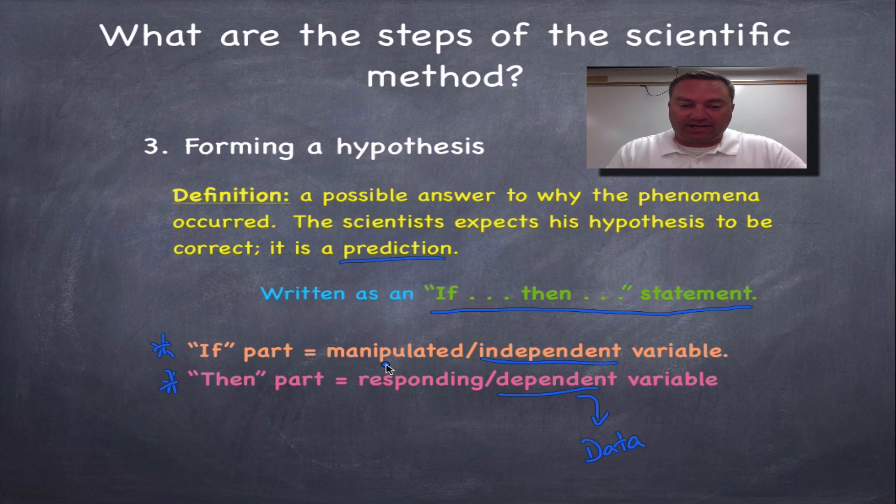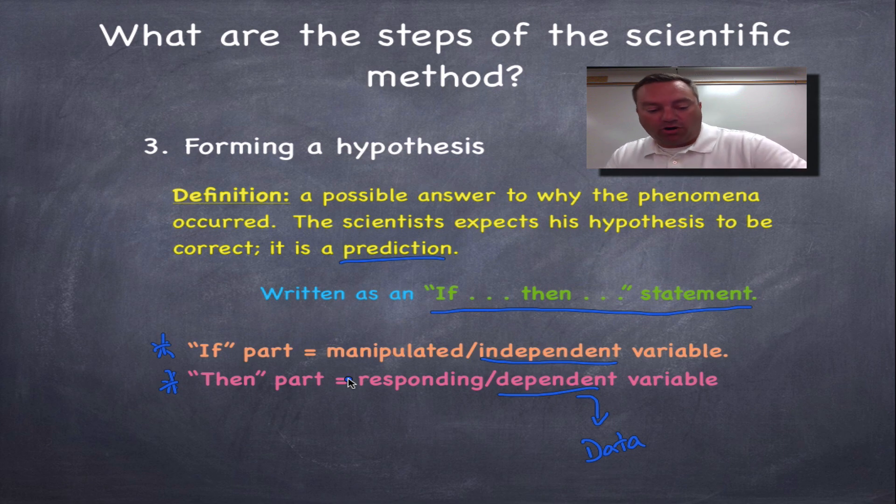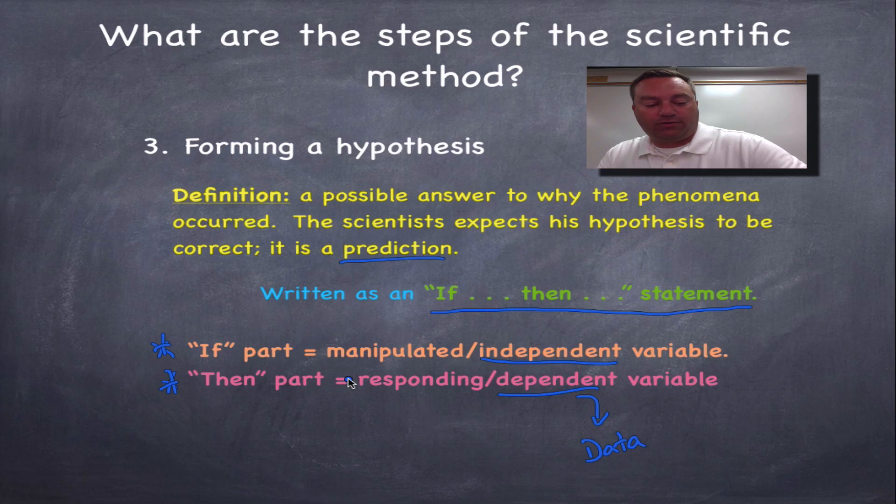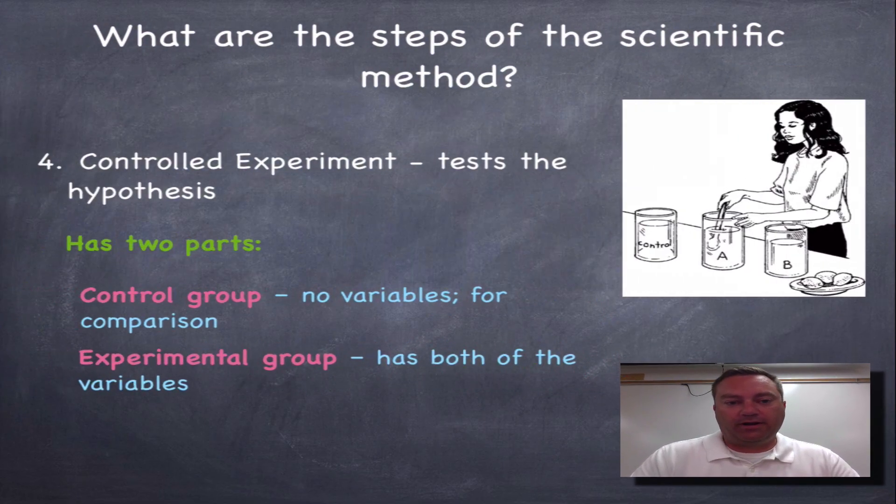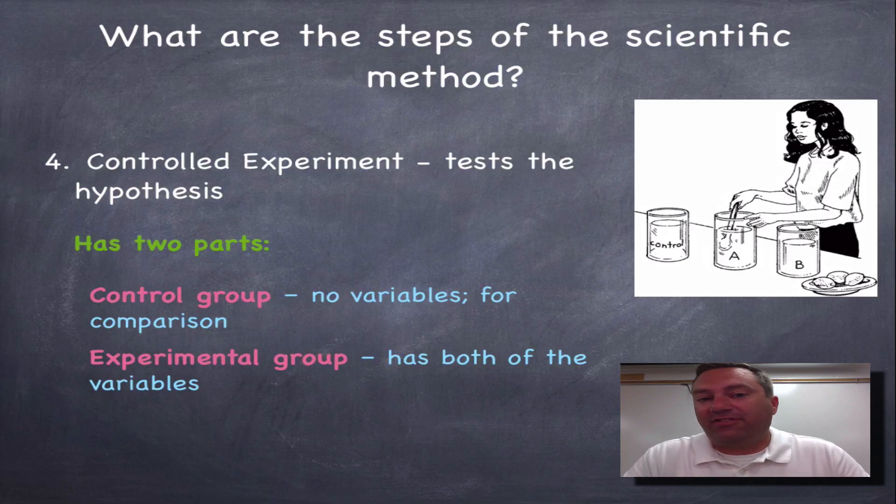Now, if you're using these terms in your class, manipulated and responding, manipulated means man. So this is the one that man or you have changed in your experiment. The responding variable are what were the changes that were caused. In other words, how did the data respond when you made that manipulated change? Hopefully that made sense to you. If you have any questions, see me in class or ask your teacher if you're one of the viewers on YouTube.